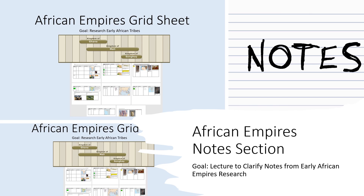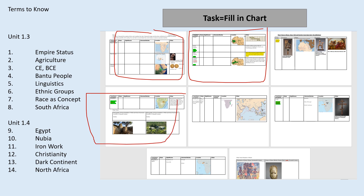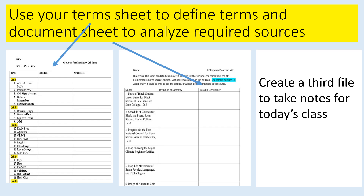This is the lecture portion for the African Empires grid sheet. During last class, students worked in groups and each student completed quick brief research on all of these particular topics, completing these charts. Today we're going to go over the information. The information for this session will help you fill out the term sheet as well as the document sheet, but for the most part we're going to be working on notes, so we can put these two files aside as we get to the lecture portion.